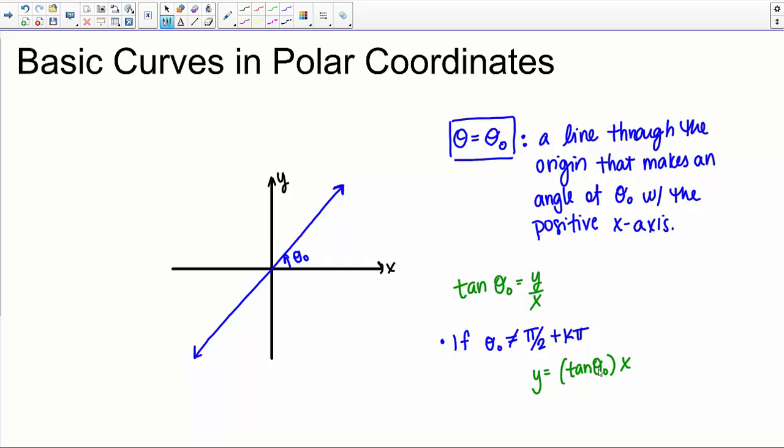Now this is an equation in Y equals MX plus B form, and our slope is the tangent of theta naught. And then our Y intercept is 0, so once again, we have a line that goes to the origin, and it has slope tangent of theta naught.